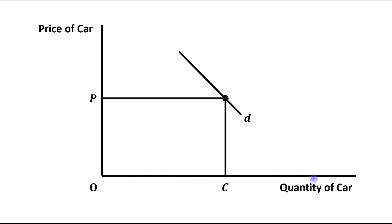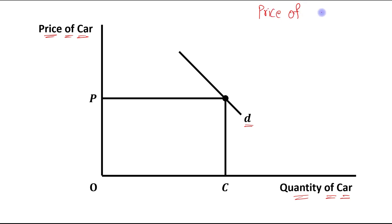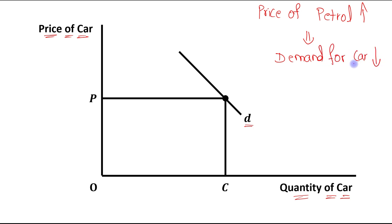Here we have two axes: the vertical axis and the horizontal axis. On the vertical axis we have taken price of car, and on the horizontal axis we have taken quantity of car. The initial price of car is assumed as OP, and the initial quantity demanded of car is OC. This is the initial demand curve for car, which is D. Now, if the price of petrol is increased, the demand for car will be decreased.